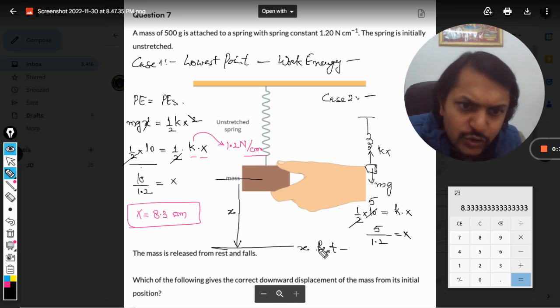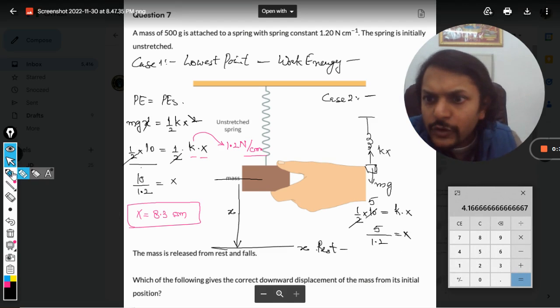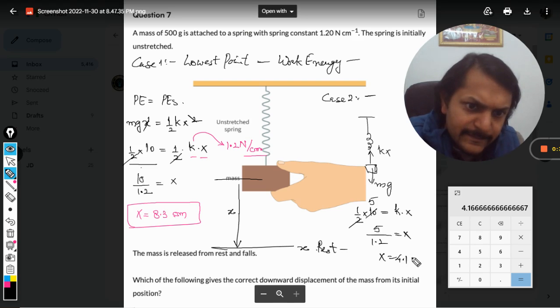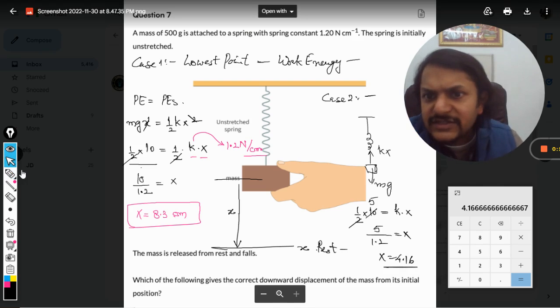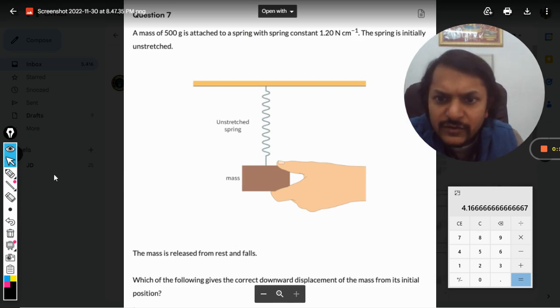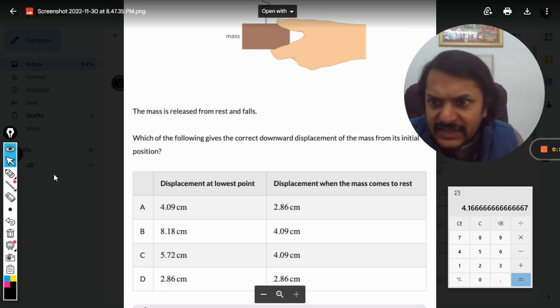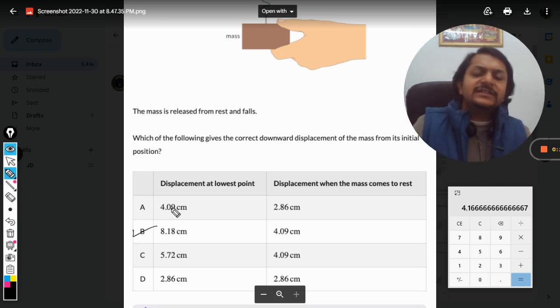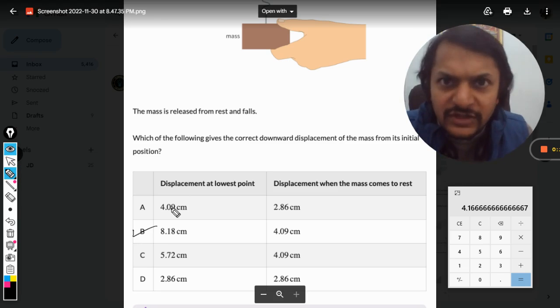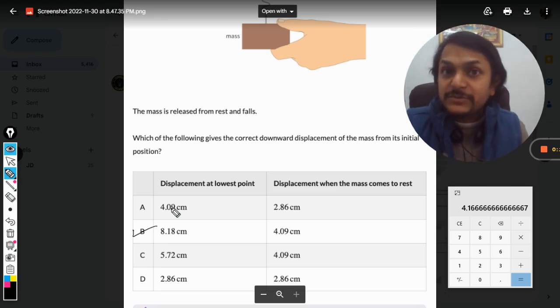So that comes out to be 4.16. So 8.3 and 4.1 - our answer is B. So this is how we do this question, my dear students. This is Professor Varun.